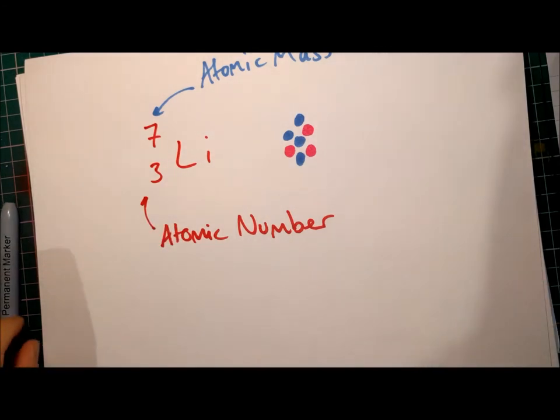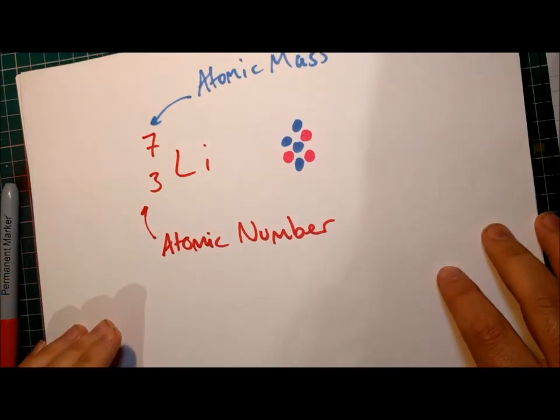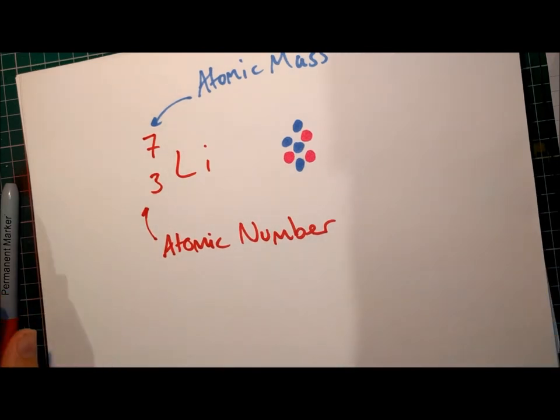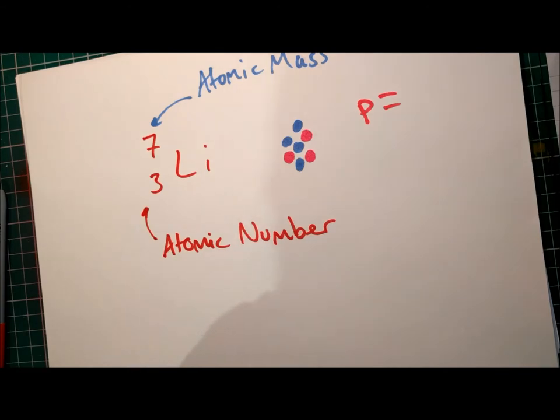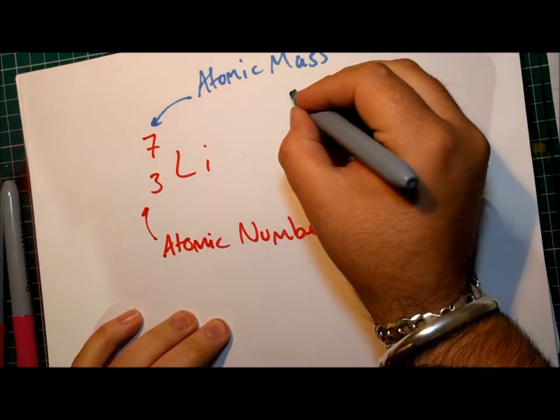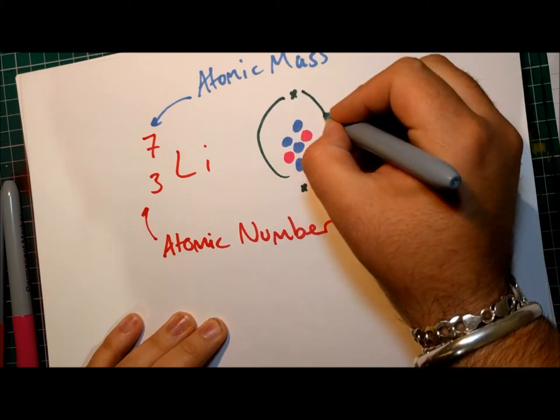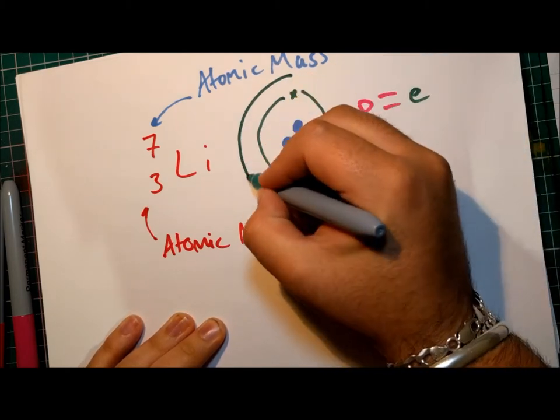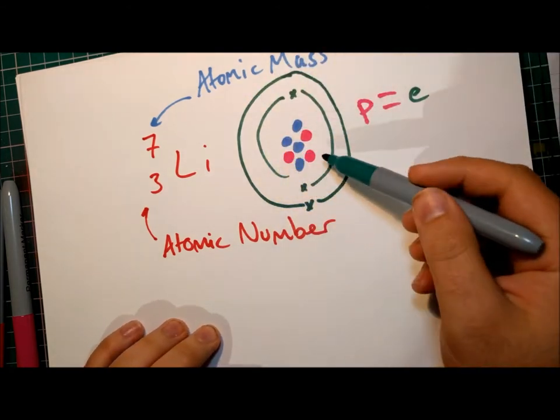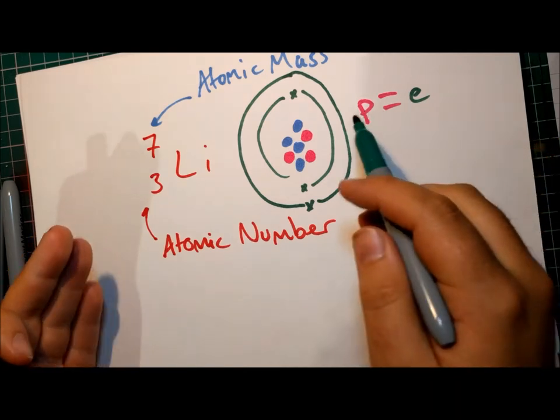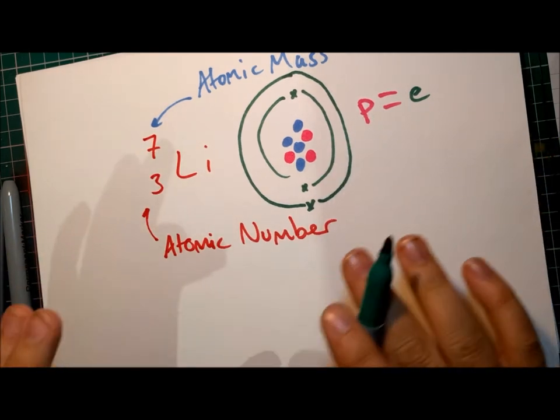Now we can also tell how many electrons there must be, because lithium is an atom, and atoms always have the same number of protons as electrons. So if there are 3 protons, there must be 3 electrons. So here's our first 2 electrons, and in the outer shell, the last one.